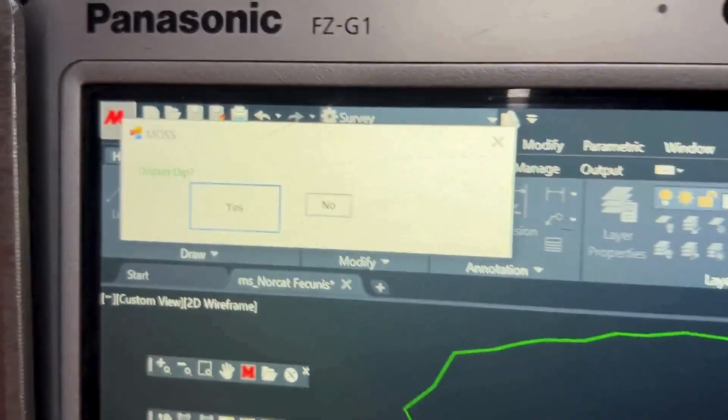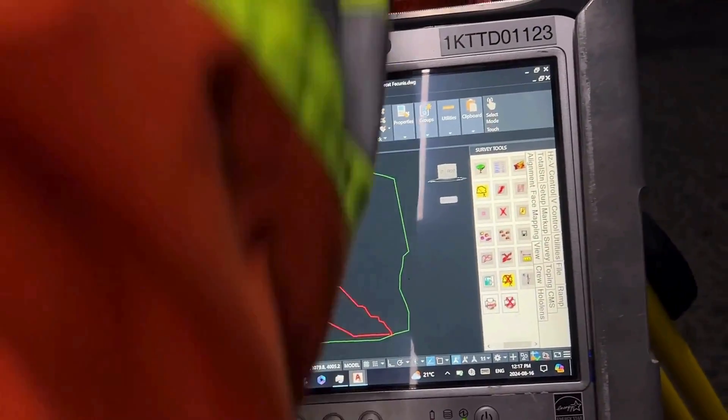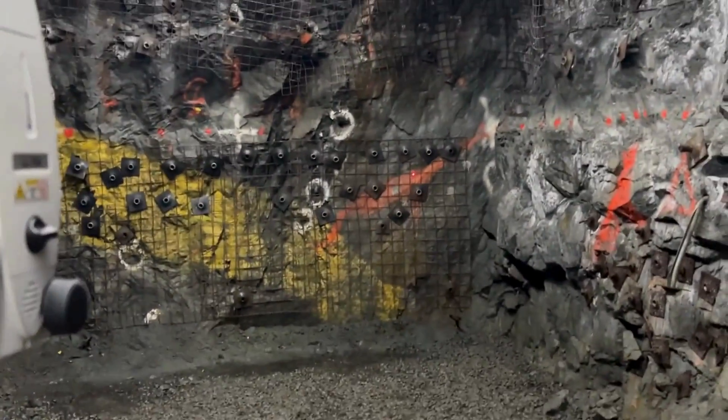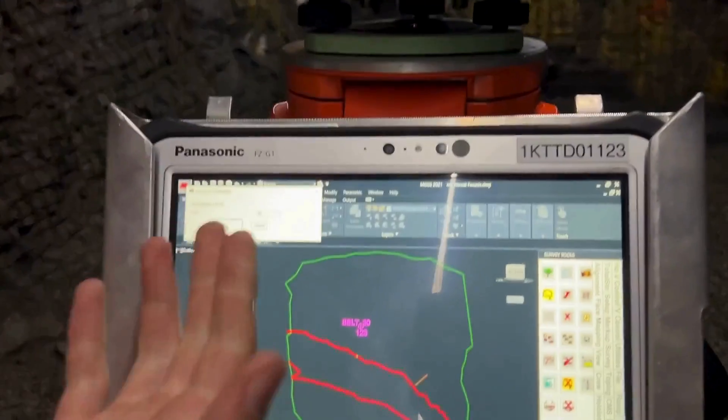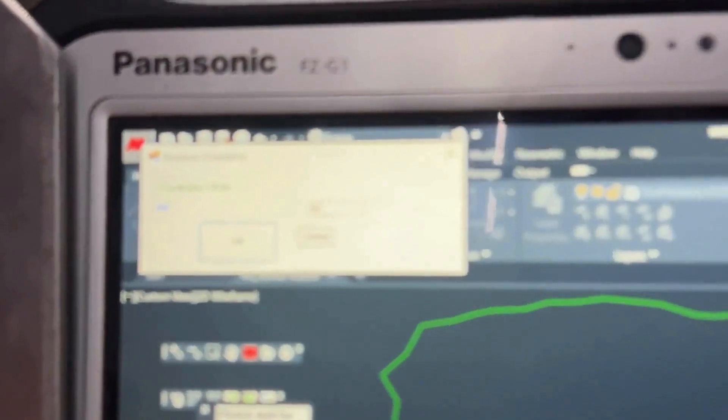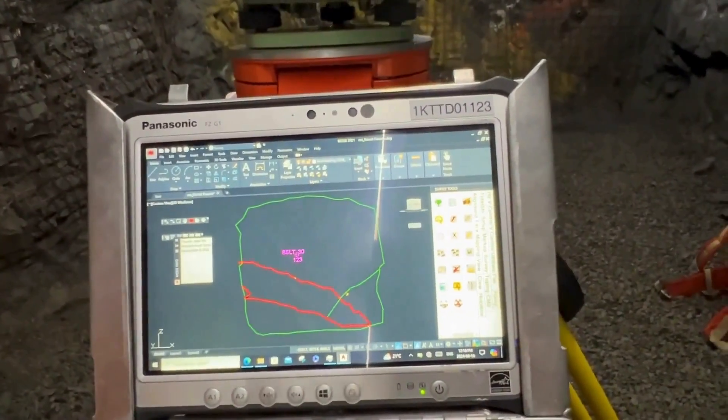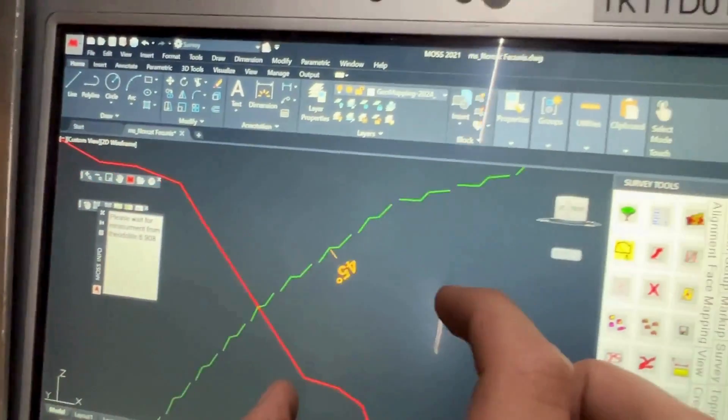Display dip? Yeah, let's show the dip of this fault. Press Yes. And we'll put that little dip marker right in the middle of the fault. Press Continue. Now it'll prompt us. Okay, what's roughly the dip of this fault? We'll call it 45 degrees. We'll press OK. And just like that, we've mapped the fault at 45 degrees.